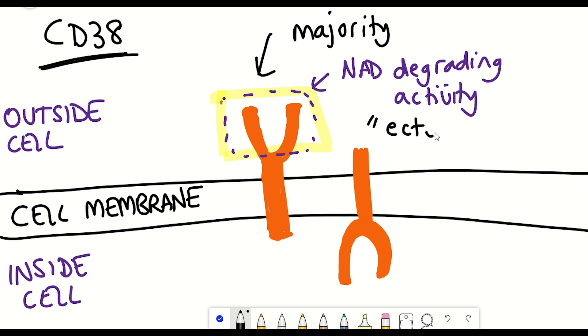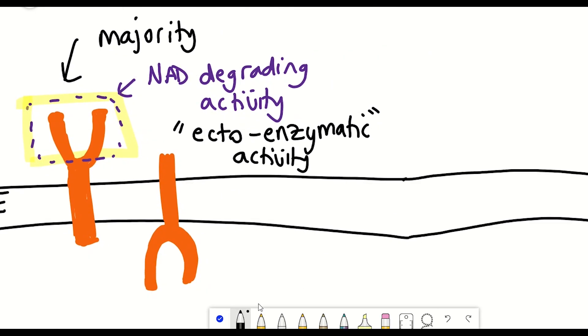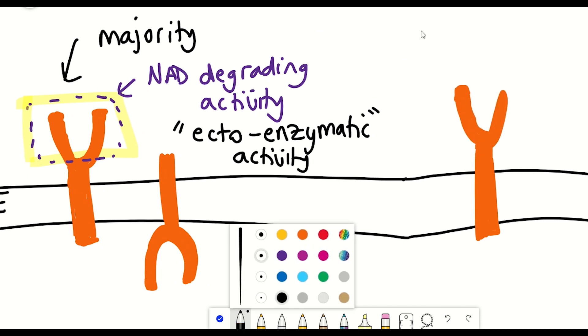But what they go on to demonstrate in this study is that the ecto enzymatic activity (the activity outside the cell) is regulating the nicotinamide nucleotide levels, and that part of this is being mediated by the extracellular degradation of the NAD plus precursor NMN.